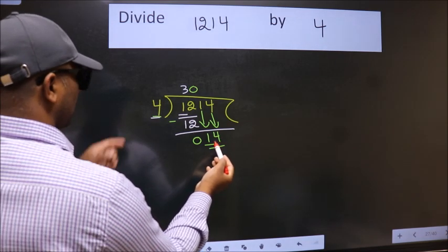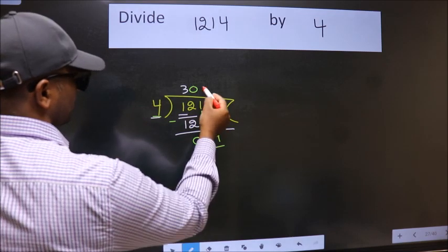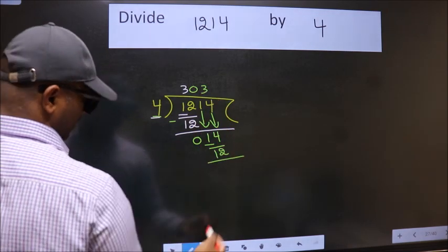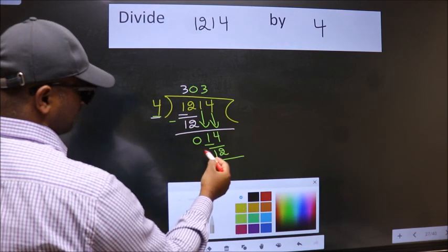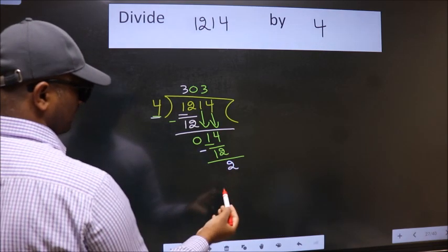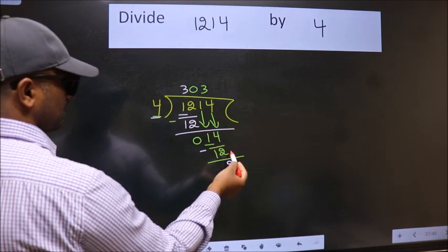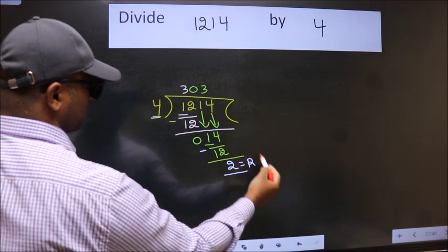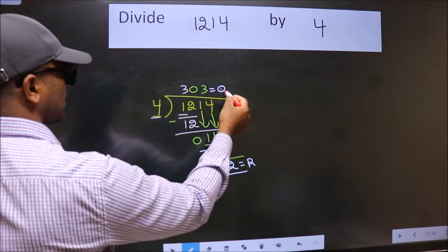A number close to 14 in the 4 table is 4 times 3, which is 12. Now we subtract and get 2. No more numbers to bring down, so we stop here. This is our remainder and this is our quotient.